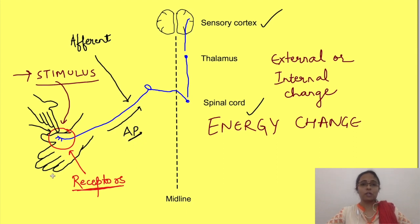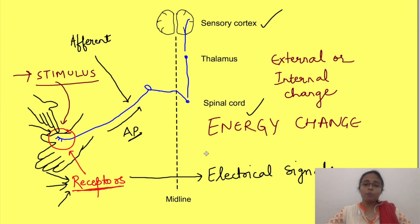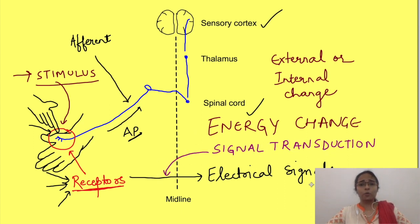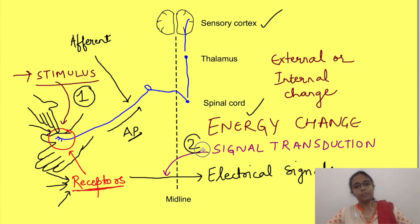Receptors act as translators, converting various forms of energy from the world into electrical signals. This conversion of one form of energy into another is known as signal transduction. Basically, receptors do two things: they respond to a specific type of stimulus — either internally or externally located — and they convert that energy into electrical energy, informing the CNS about the stimuli.